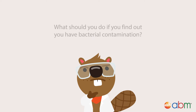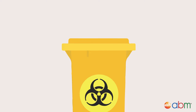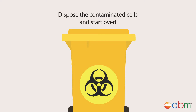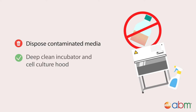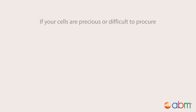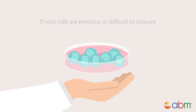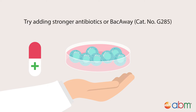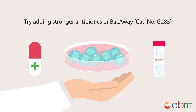So, what should you do if you find out you have bacterial contamination? If you have stock files of your cells, it is best to dispose of your contaminated cells and start over. You'll also need to dispose of your old media and do some deep cleaning of your incubator and cell culture hood. If your cells are precious or difficult to procure, you can try to add stronger antibiotics to your culture to help fight the bacterial contamination.